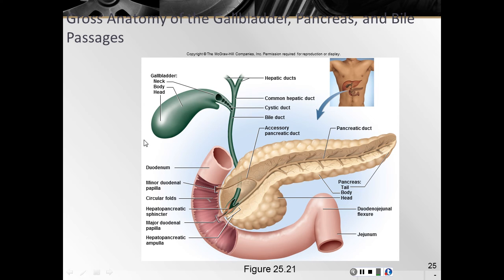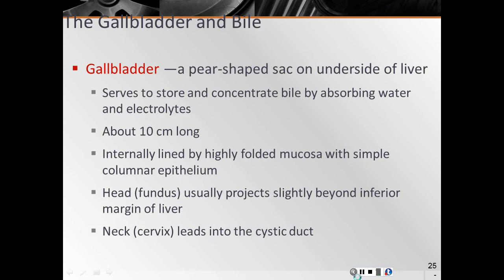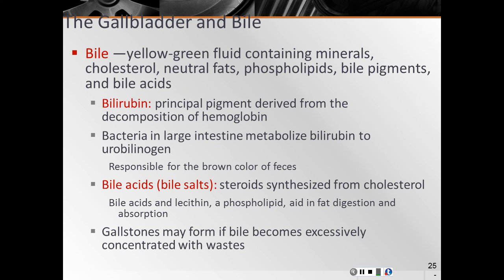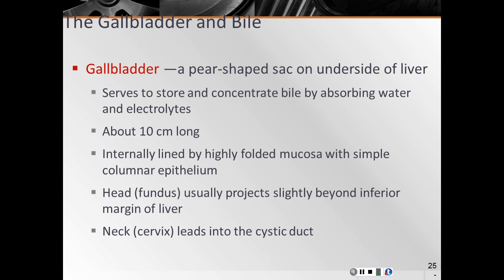Here we have the common hepatic duct and the cystic duct coming directly from the gallbladder, joining to form the bile duct that secretes into the small intestine — specifically the duodenum. The gallbladder is another accessory organ — a pear-shaped sac on the underside of the liver that stores and concentrates bile. It is about 10 centimeters long and is lined with a highly folded mucosa with simple columnar epithelium.